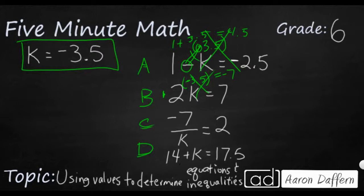So we have our third option, negative 7 over k. So let's make this negative 7 over negative 3.5. So we do have two negatives here, and those two are going to cancel each other out. So it's just going to be 7 divided by 3.5. Well, 3.5 times 2 makes 7. So this looks like that is going to be the answer.